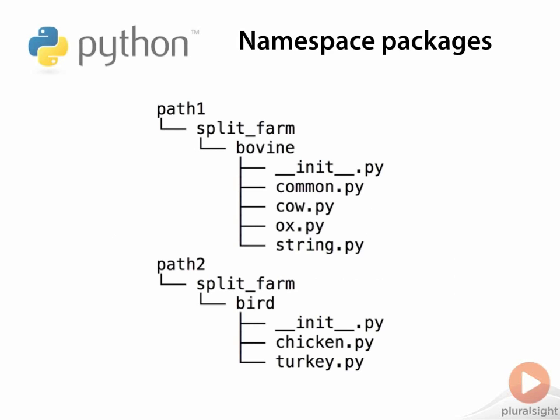As a simple example, let's see how we might turn the farm package into a namespace package called splitFarm. Instead of putting all of the code under a single directory, we would have two independent parts rooted at path1 and path2. This splits the distribution of the farm package between birds and bovine, which seems pretty natural.